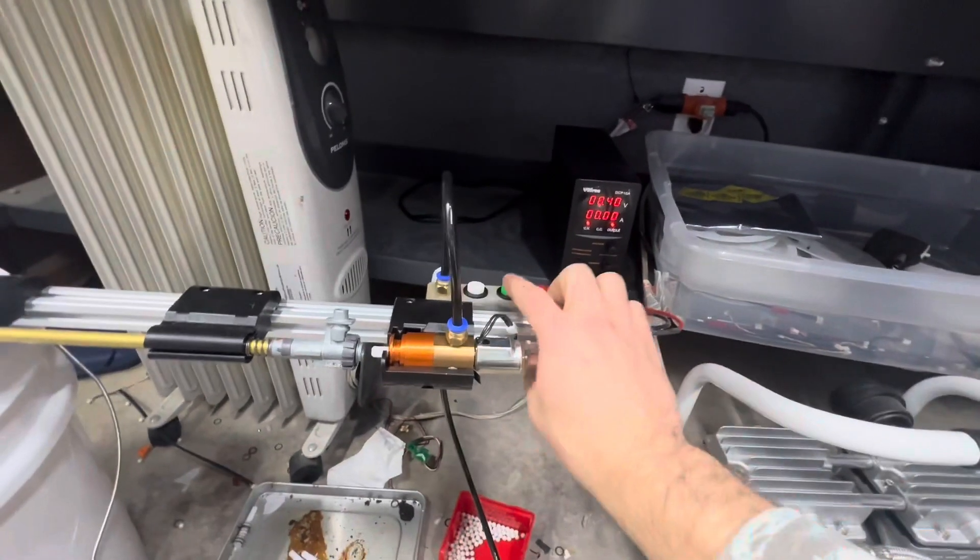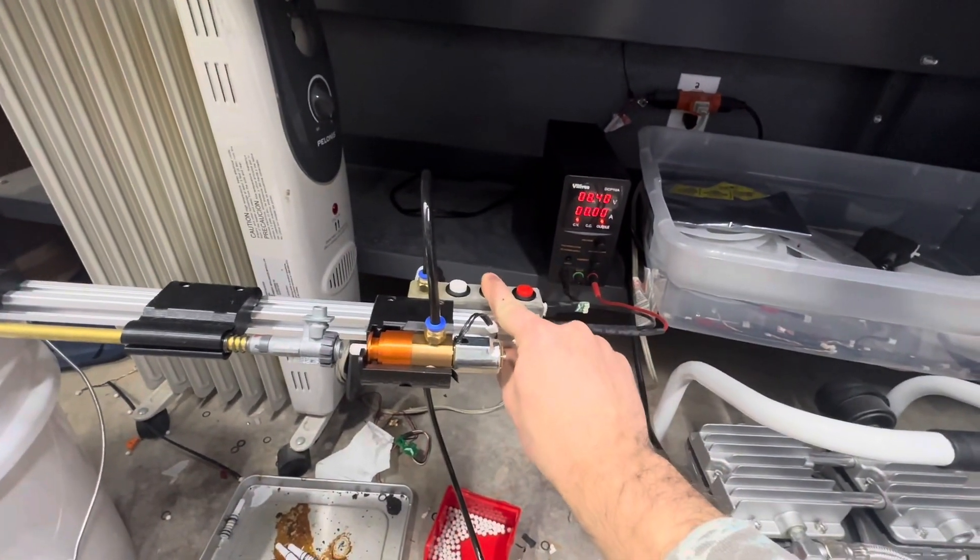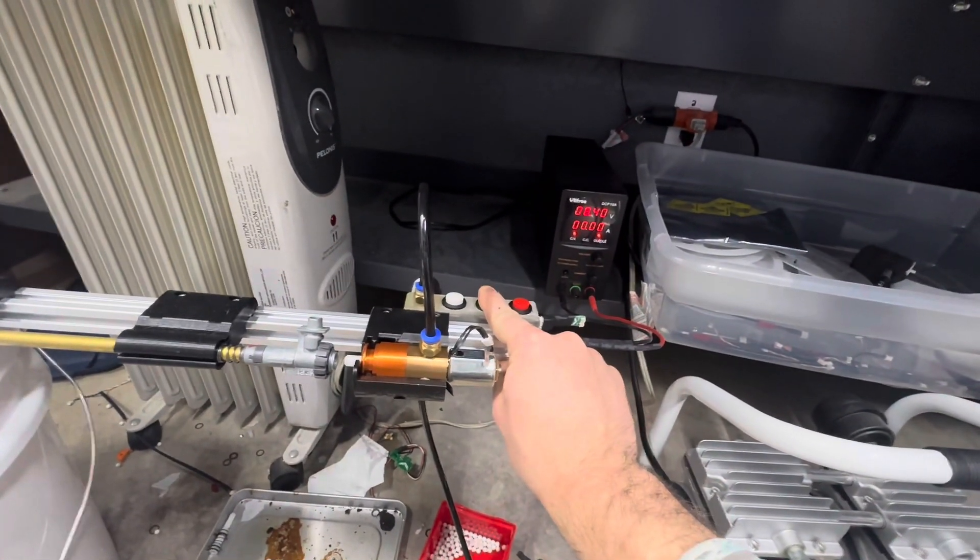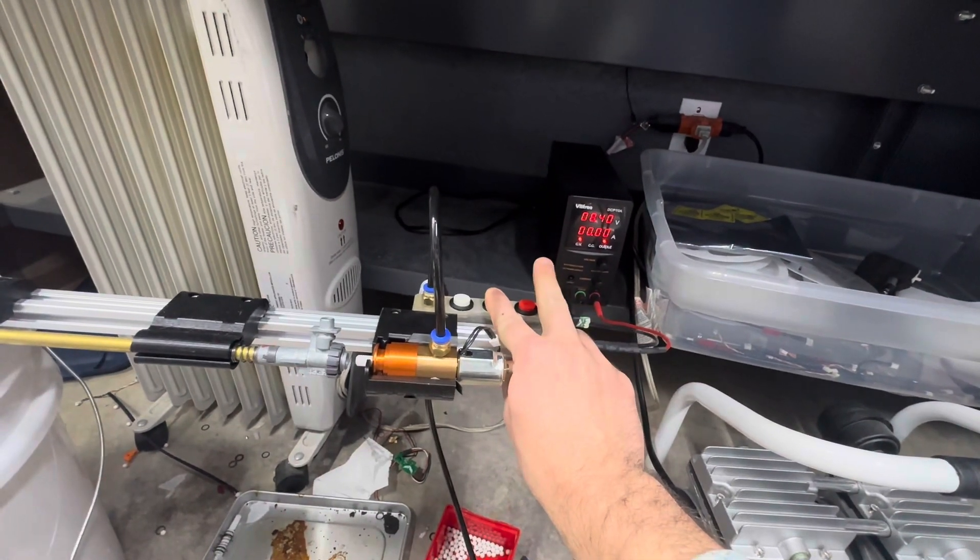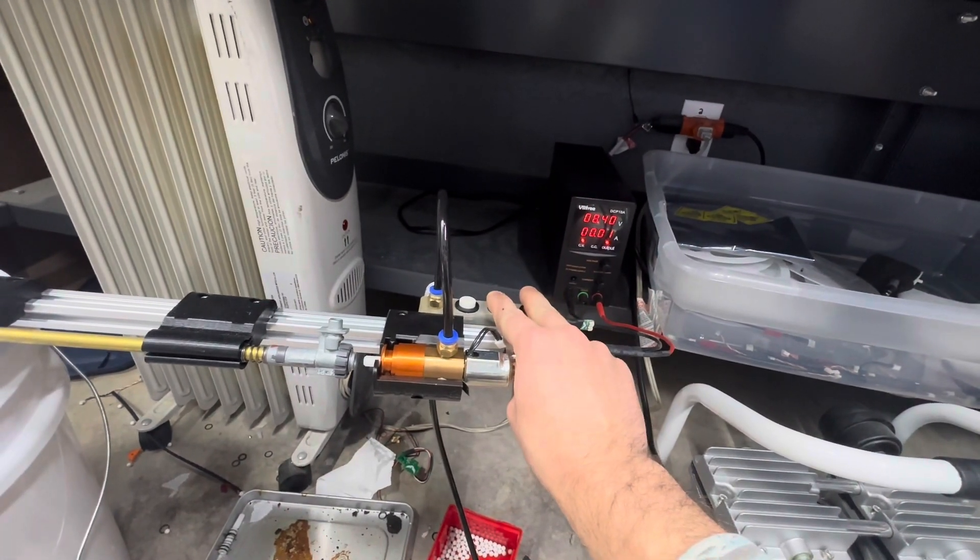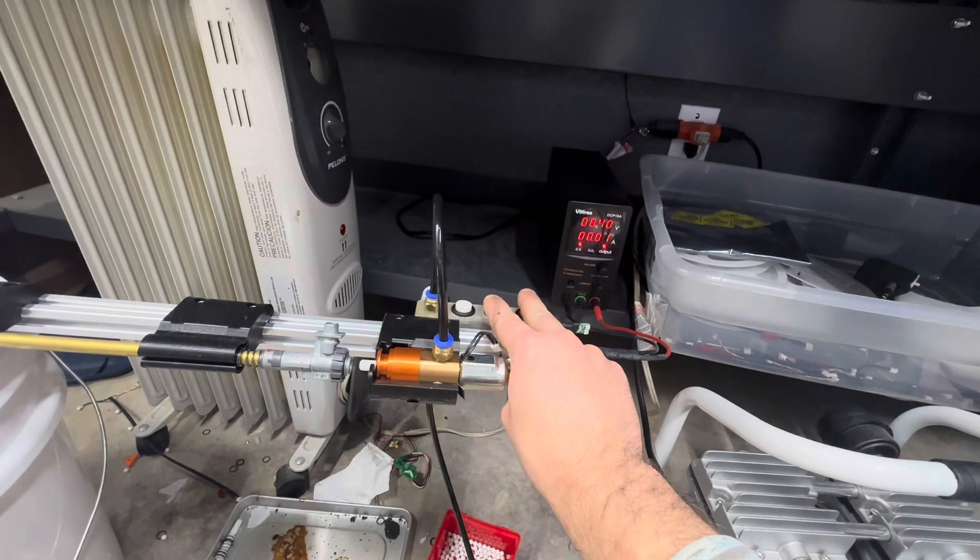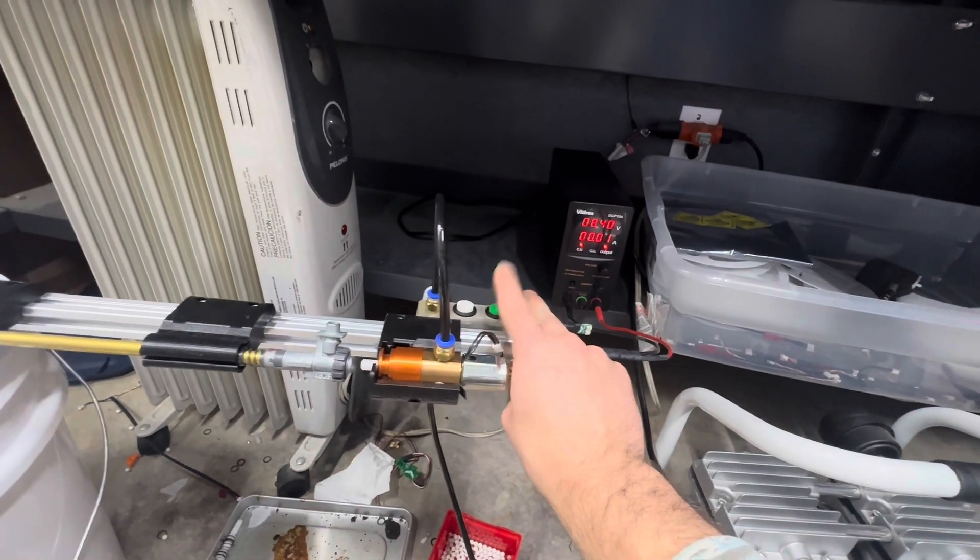So if I want to enter burst, I do the same exact thing. I hold the trigger for at least three seconds to enter programming, and then I hold the selector for one, two, three, four, five seconds, release the trigger.